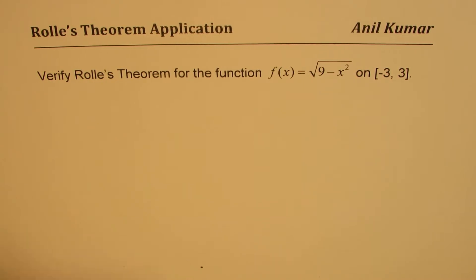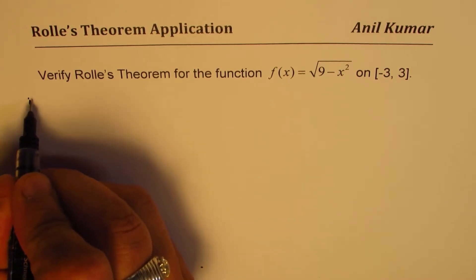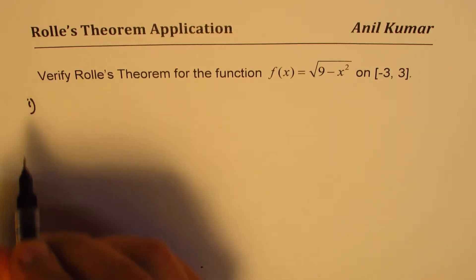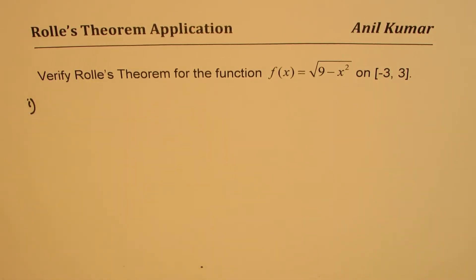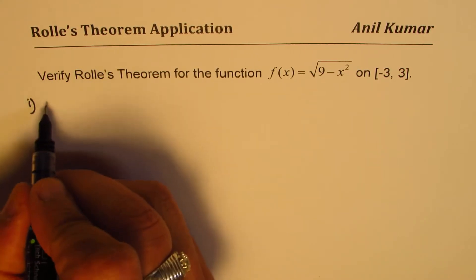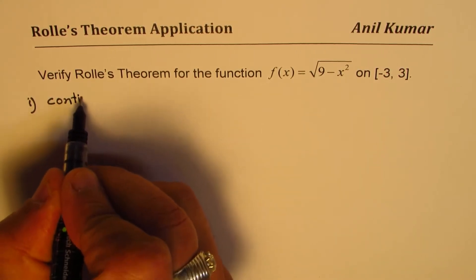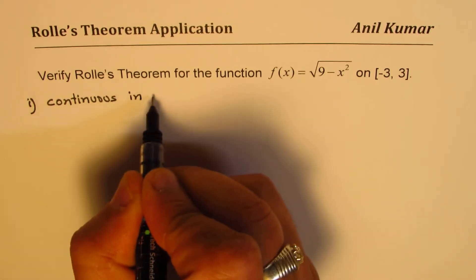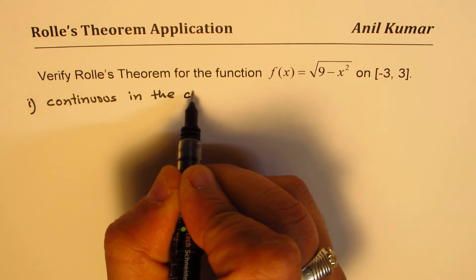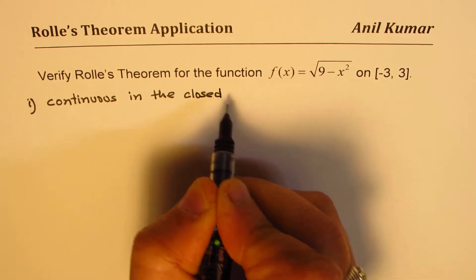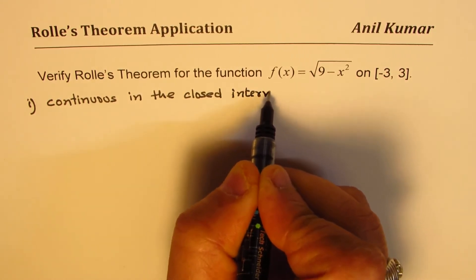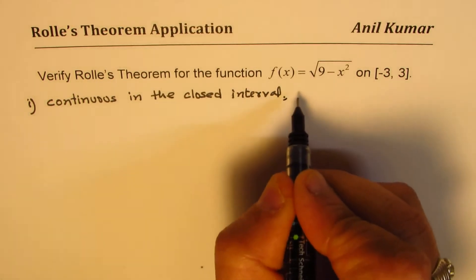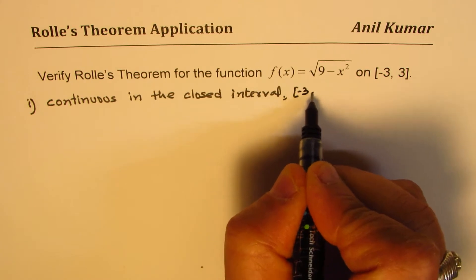Whenever we say verify Rolle's Theorem, we need to verify three things. First is that the function is continuous within the given closed interval. You need to prove that it is continuous in the closed interval. In our case, the closed interval is from -3 to 3.